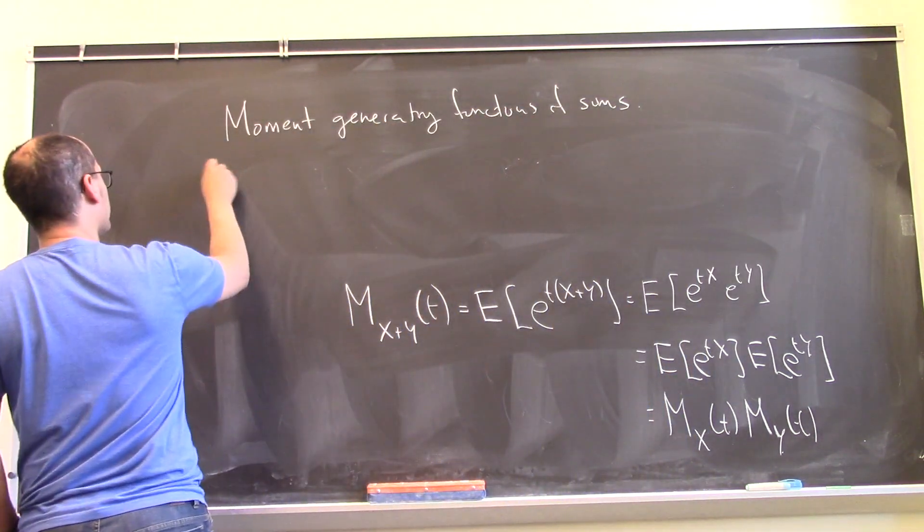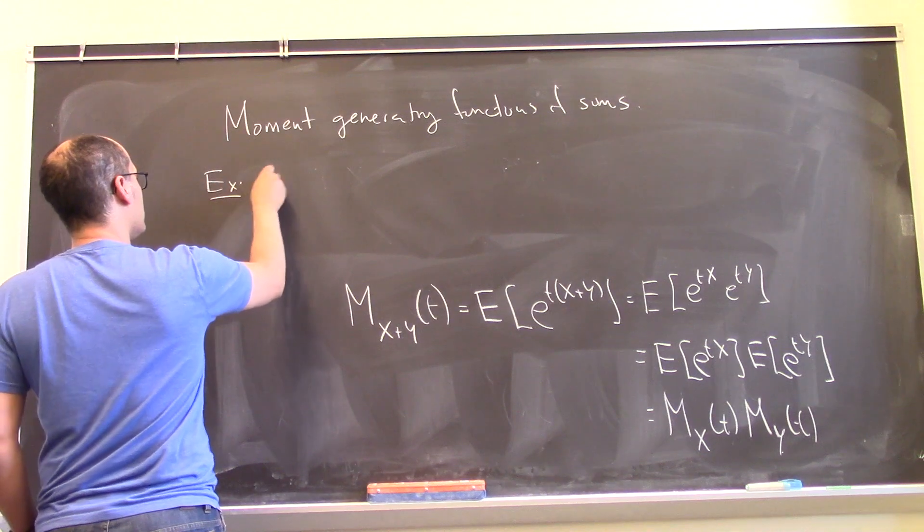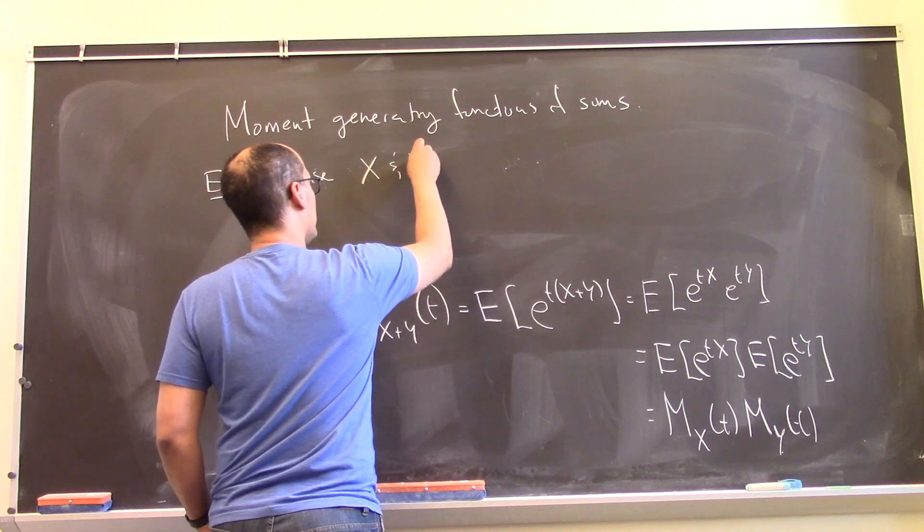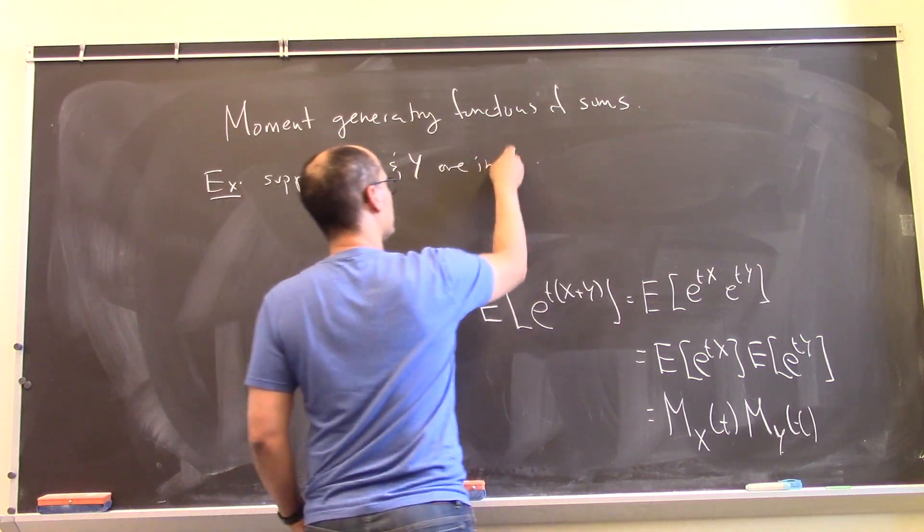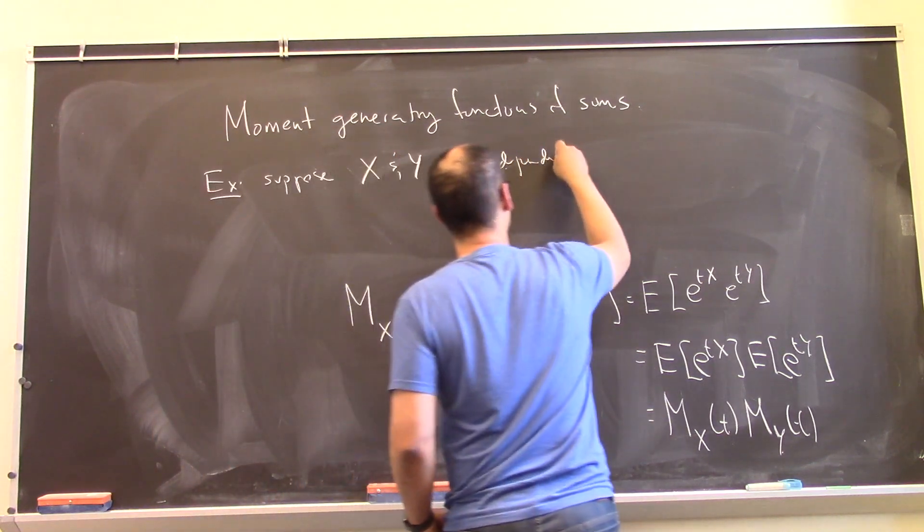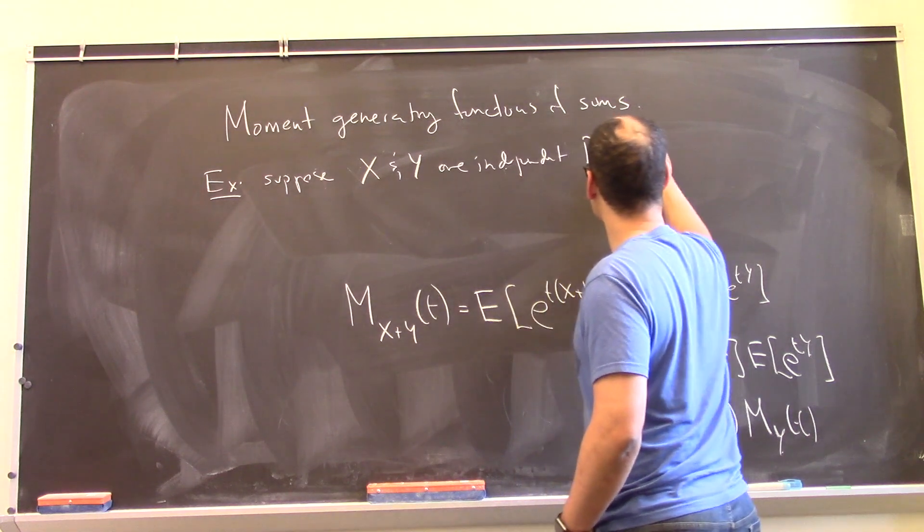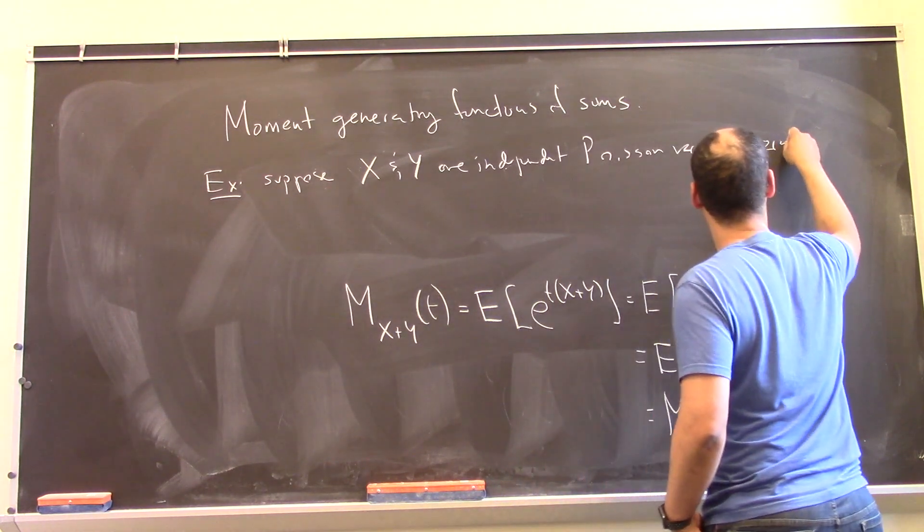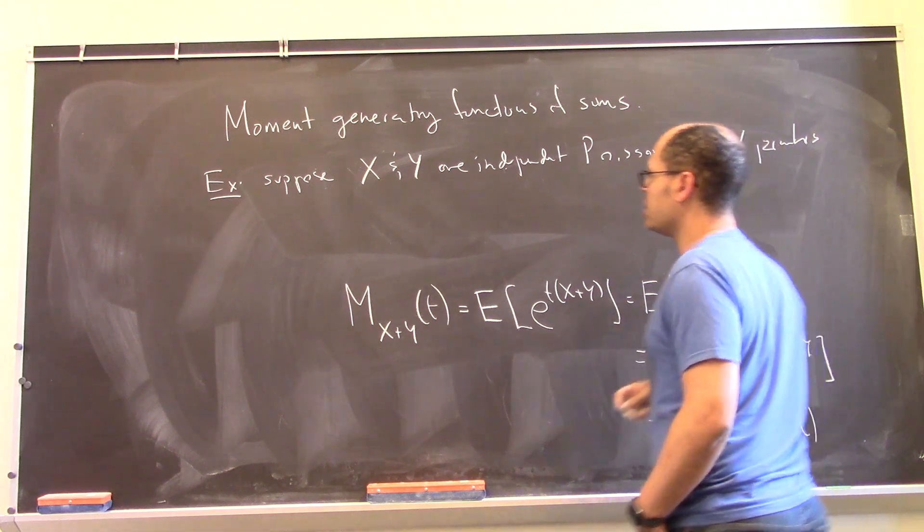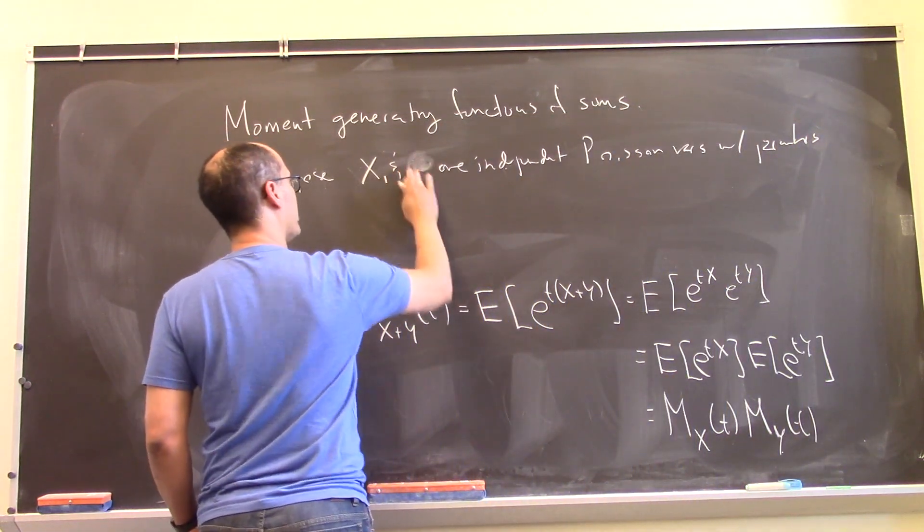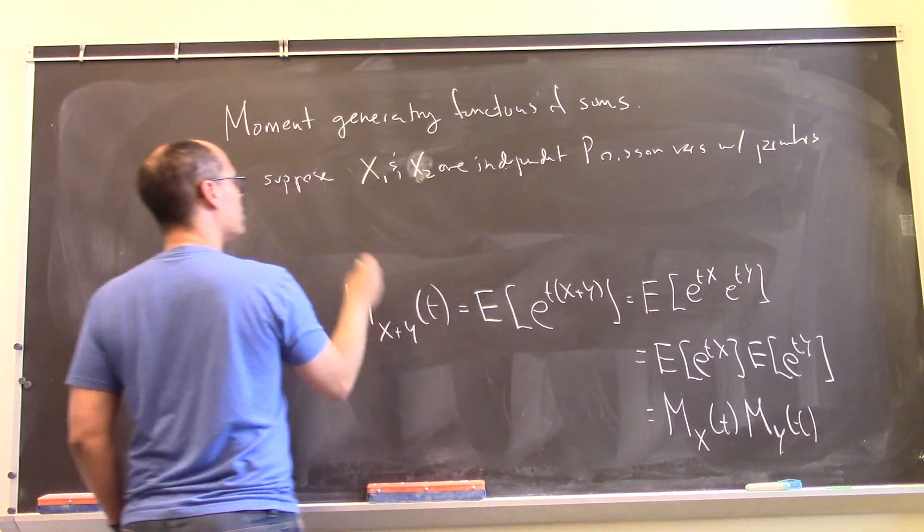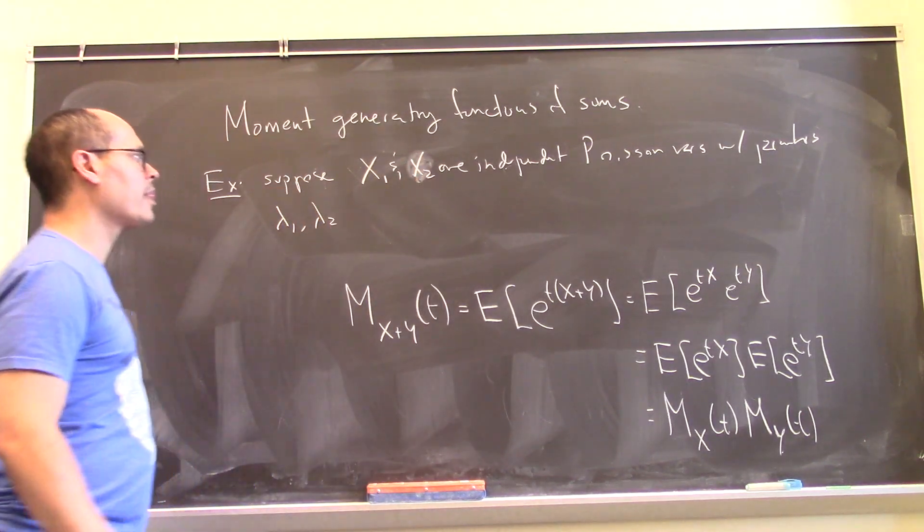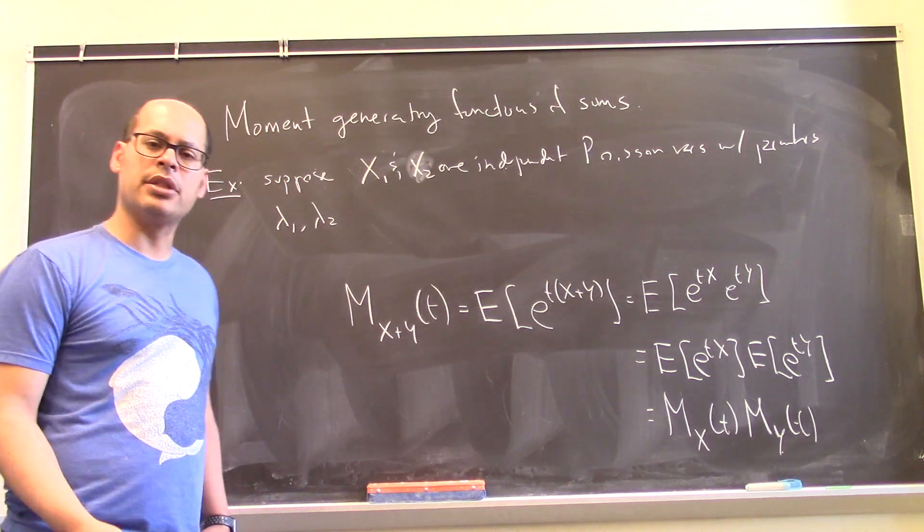For example, suppose x1 and x2 are independent Poisson variables with parameters lambda 1 and lambda 2. And let's consider their sum.